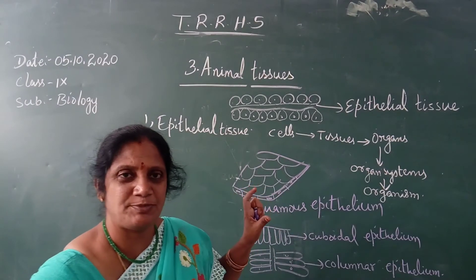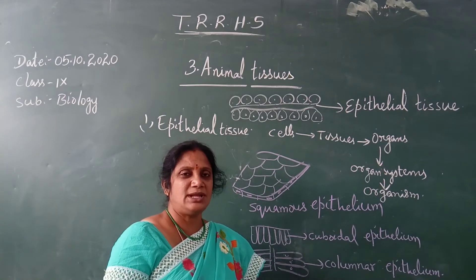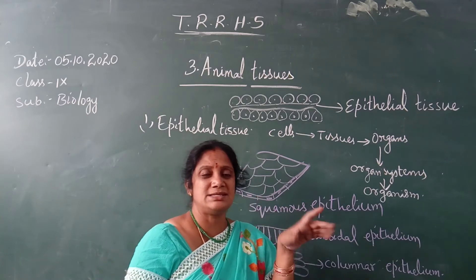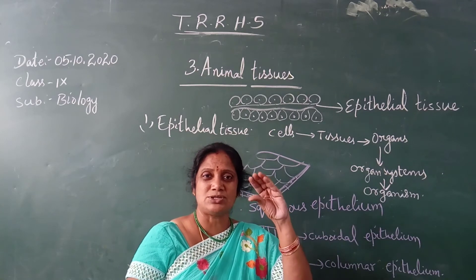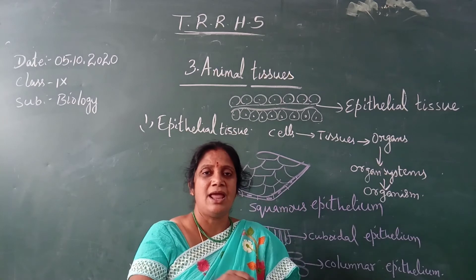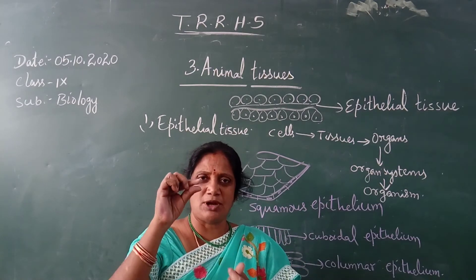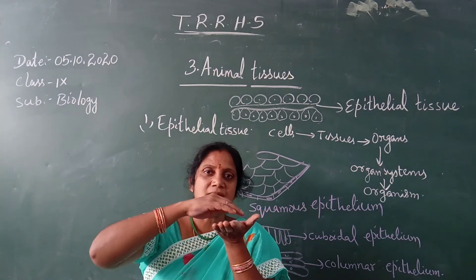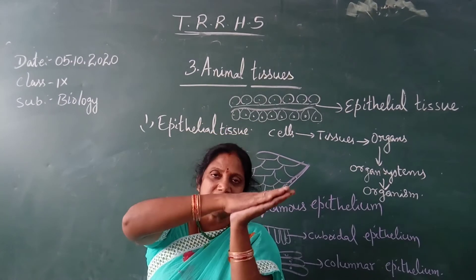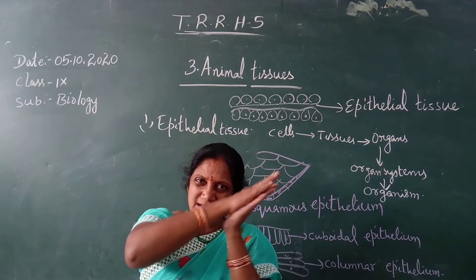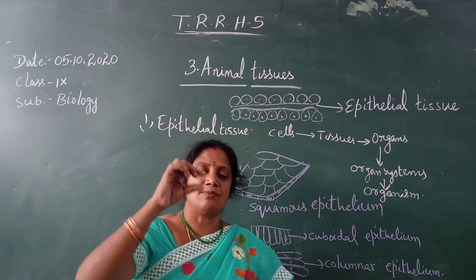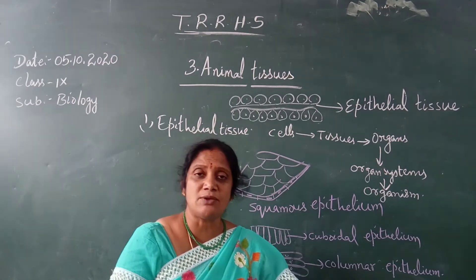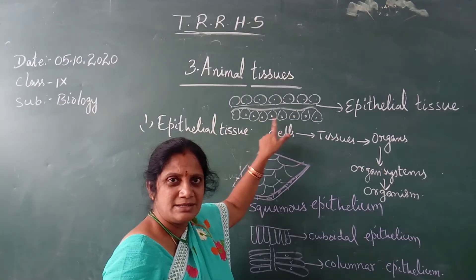To understand epithelial tissue, here is a simple experiment: take a piece of hen's skin and soak it in dilute acid or vinegar for 2–3 hours until it becomes soft. Then place a small piece on a slide, put a cover slip on top, and smash it gently. Observe it under the microscope and you will see a characteristic stretched pattern.